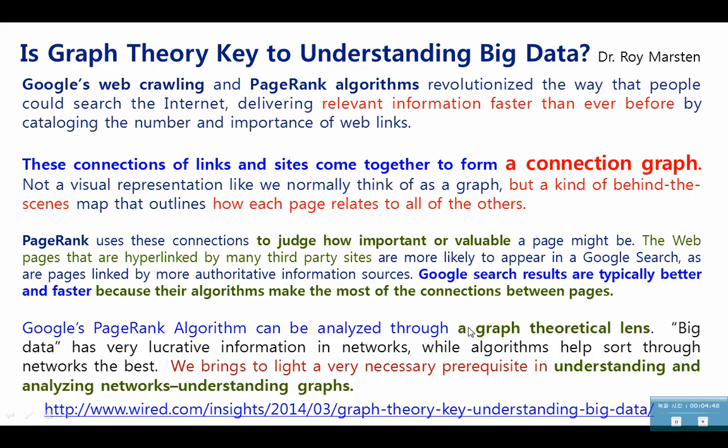Then, he also gave the answers. Google's web crawling and PageRank algorithm revolutionized the way that people could search the internet and deliver relevant information faster than ever before. These connections of links and sites come together to form a connection graph. PageRank uses these connections to judge how important or valuable a page might be.